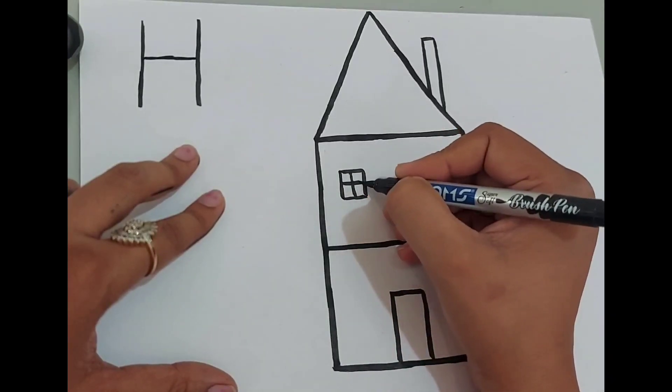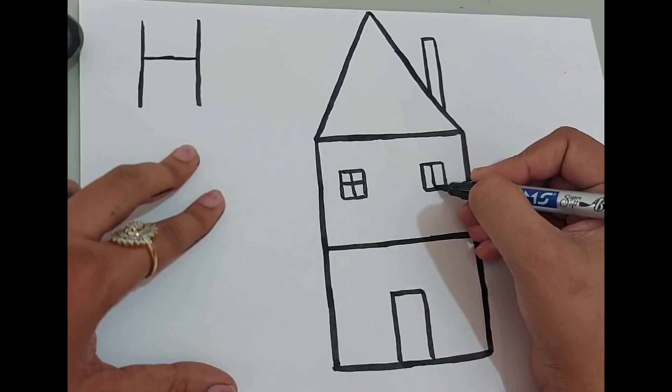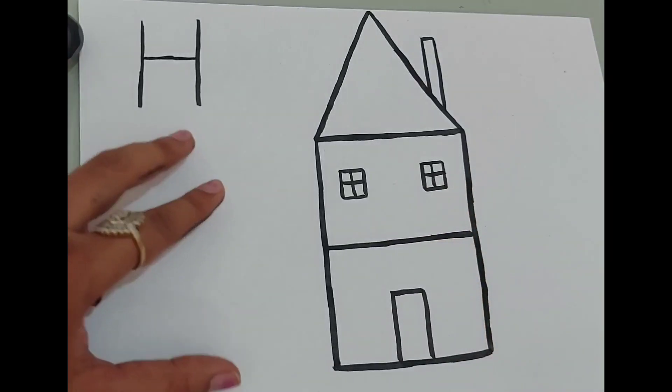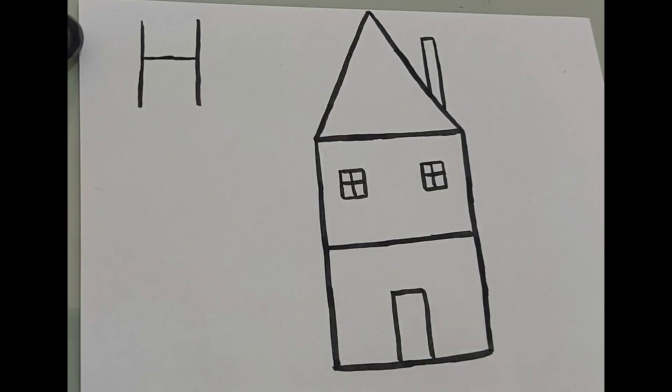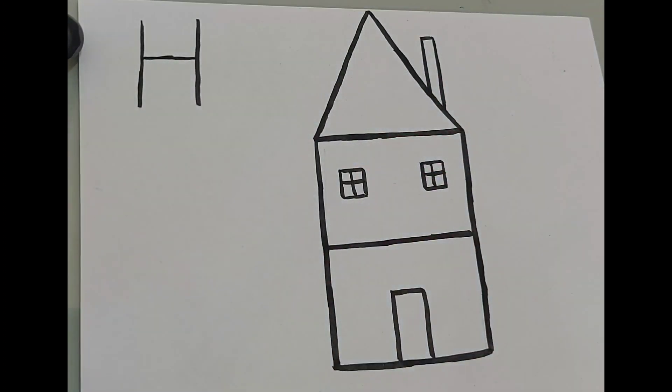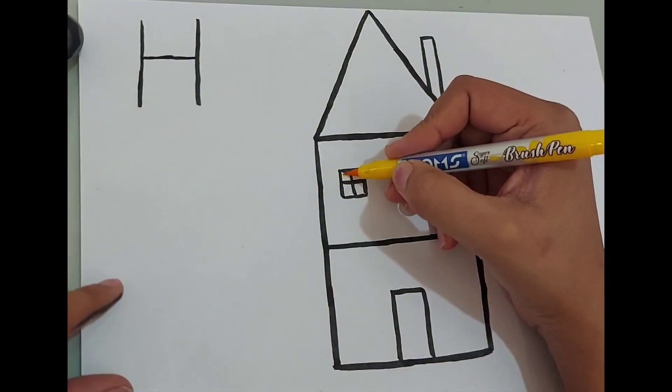And our house drawing, H for house, is complete. Now start coloring it. I'm going to color windows with yellow color.